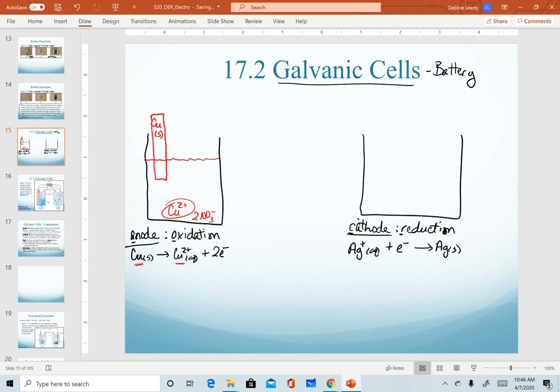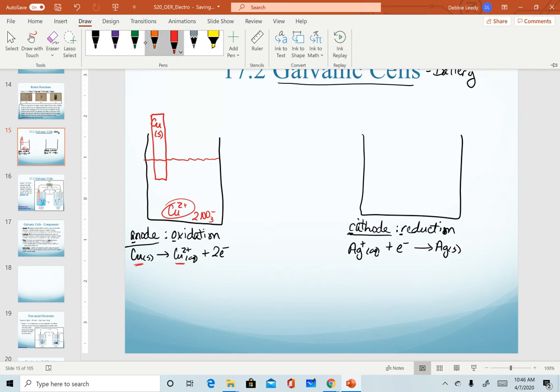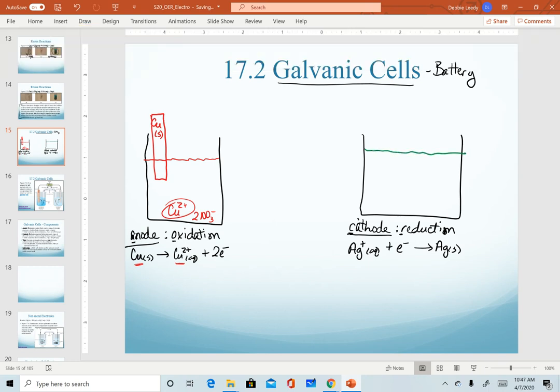I'm going to do the same thing on the silver side. I don't think the pencil is going to show up well. We'll have silver be green for today. Again, in here, I have a solution of silver ions. I can't have just a cation, so I might grab a solution of silver nitrate from the lab bench. I'm going to put a strip of solid silver in that solution. I have both parts of my reaction in here, the ionic and the solid form.